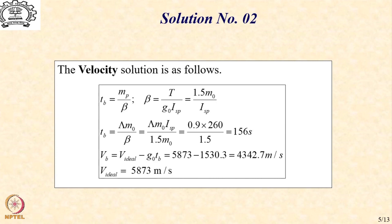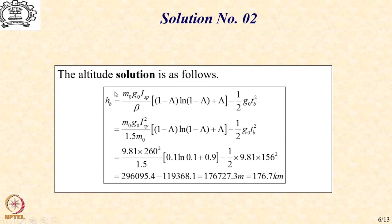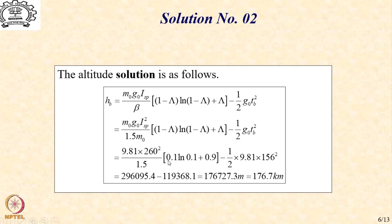Let us now move over to the altitude solution. We recall the altitude expression: M0·G0·ISP by beta, times (1 minus lambda)·ln(1 minus lambda) plus lambda, minus half·G0·Tb squared. As beta is a function of ISP and M0, substituting 1.5·M0 by ISP, M0 cancels and we are left with G0·ISP squared by 1.5. Lambda is specified as 0.9, so (1 minus lambda) becomes 0.1·ln(0.1) plus 0.9, and Tb is 156 seconds. This gives an altitude of 176.7 kilometers.